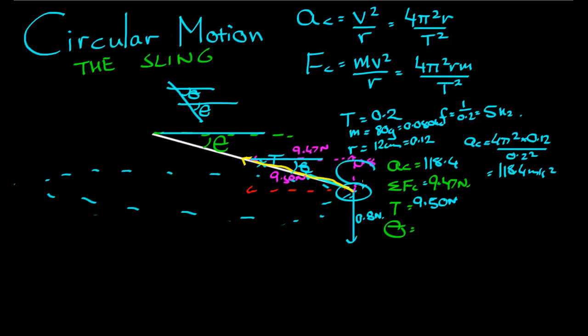This one here, we know the opposite, we know the adjacent. Tan θ is equal to opposite over adjacent. So tan⁻¹, the inverse tan of 0.8 over 9.47 is equal to the angle. And that comes to 4.8 degrees. So the angle, 4.8 degrees.